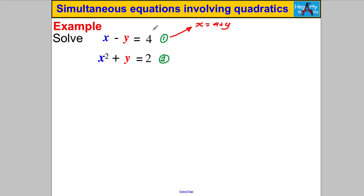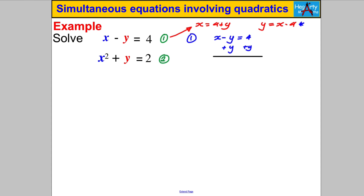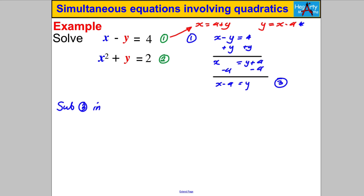Alternatively, we could make y the subject: add y to both sides and then subtract 4, giving y equals x subtract 4. Either of those could be used as a substitution into the second equation. It's probably easiest to substitute into the second equation in this form, because then we don't have to expand squared double brackets. From equation 1: x subtract y equals 4, add y to both sides gives x equals y add 4, then subtract 4 gives y equals x subtract 4. Call this equation 3.